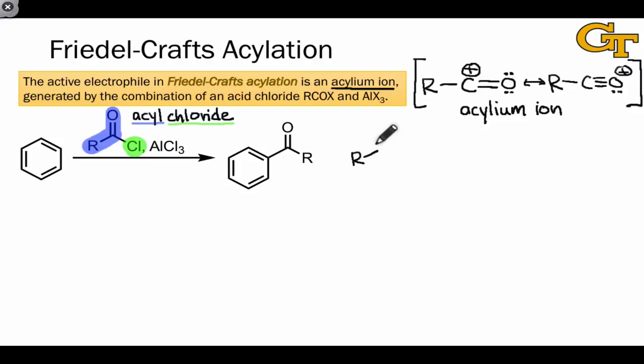Acyl chlorides can be synthesized from carboxylic acids using the reagent thionyl chloride SOCl2. In addition to the acyl chloride product, this reaction produces SO2 as well as HCl.